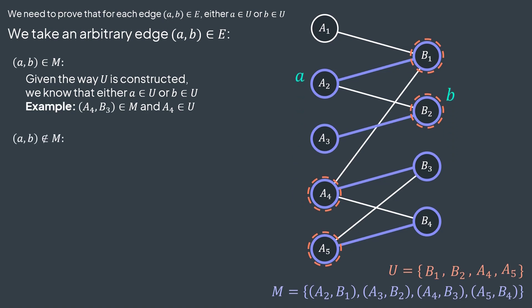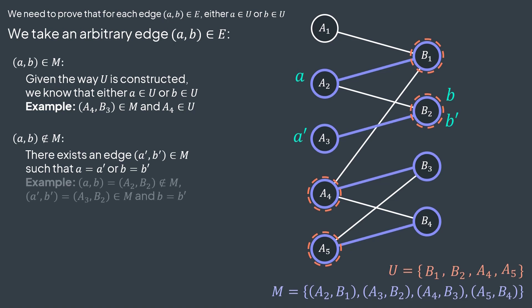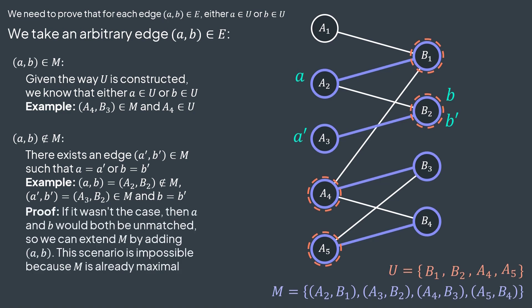What if (a, b) is not in M? Then there exists in M an edge (a', b'), with either a' being equal to a, or b' being equal to b. The proof is that if it wasn't the case — if both a and b weren't incident to an edge in the matching — then a and b would both be unmatched, so we could just add the edge (a, b) to the matching and get a bigger matching. However, because M is maximal, it's impossible — it cannot be a subset of a bigger matching — so either a is matched or b is matched.